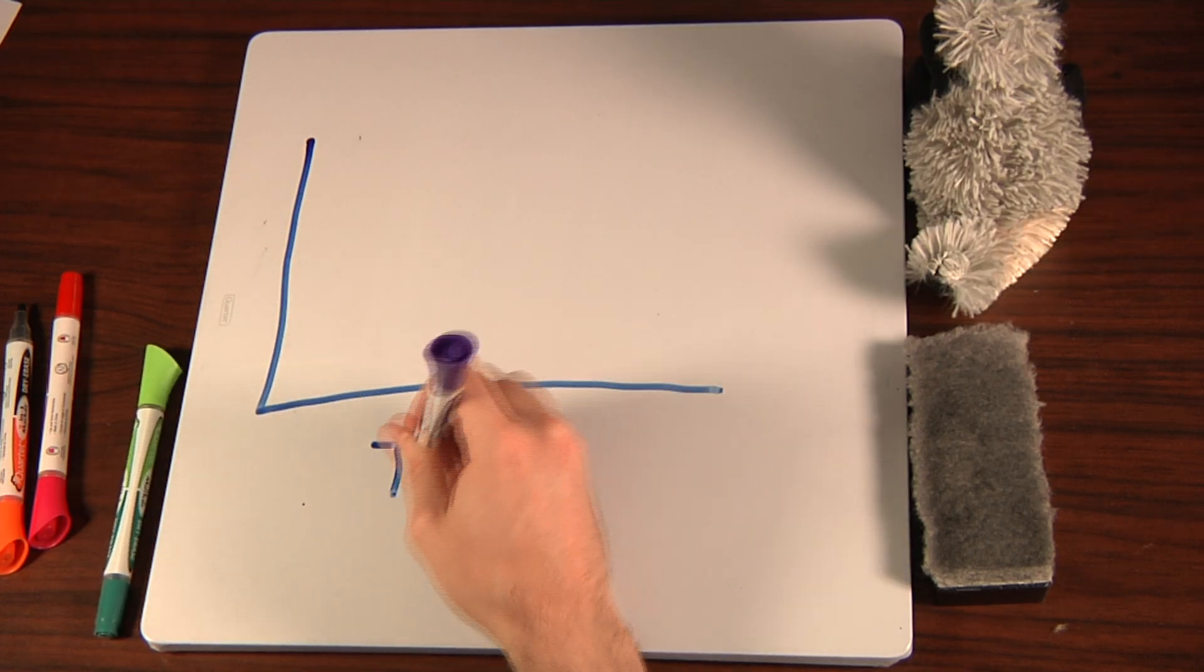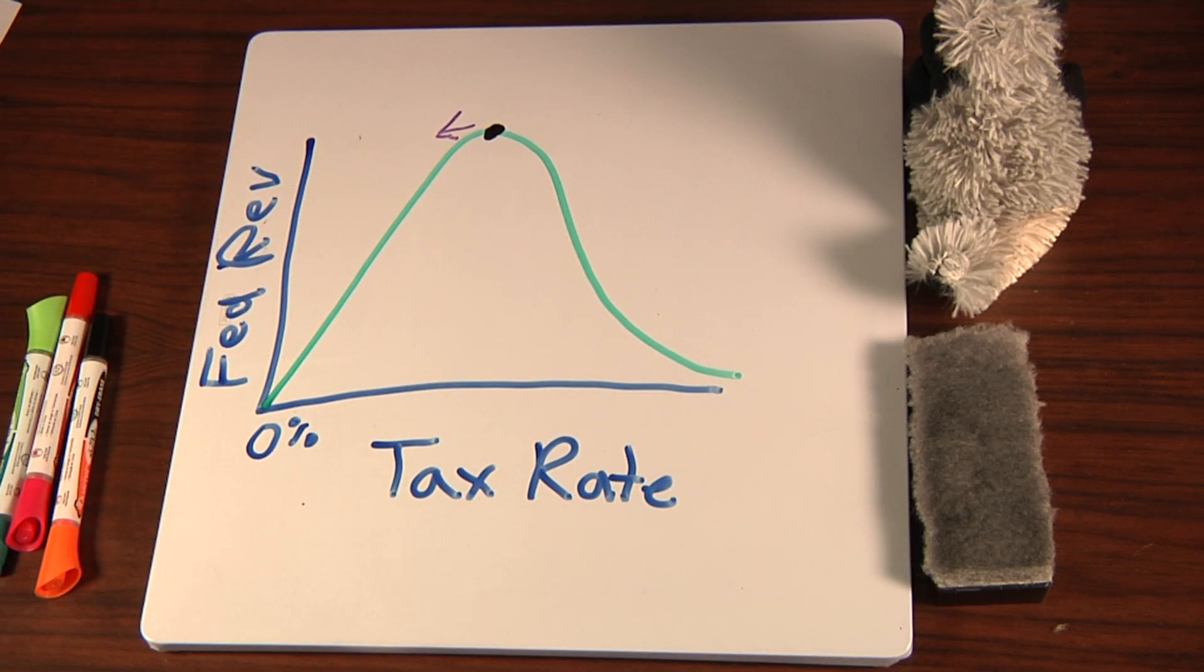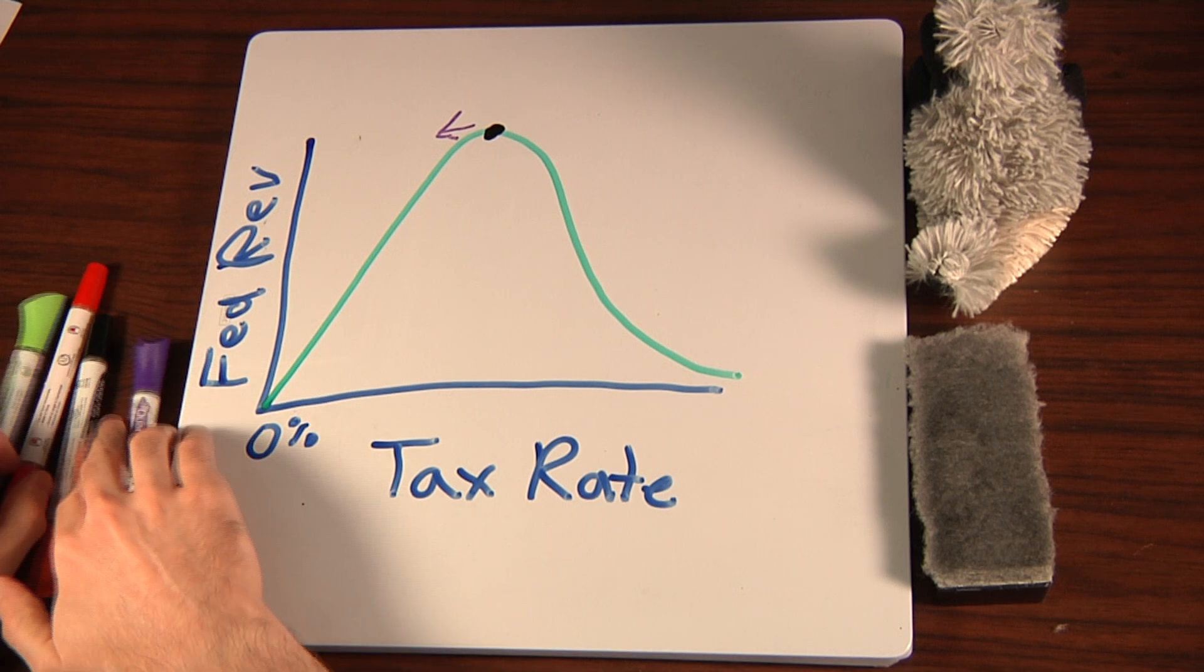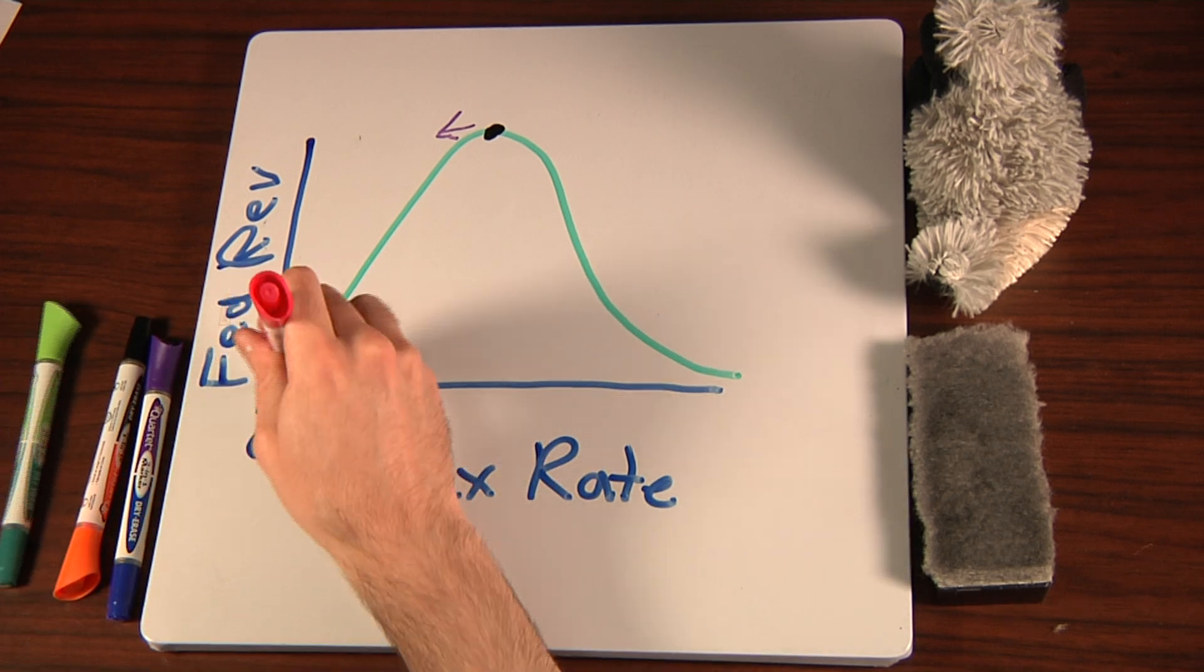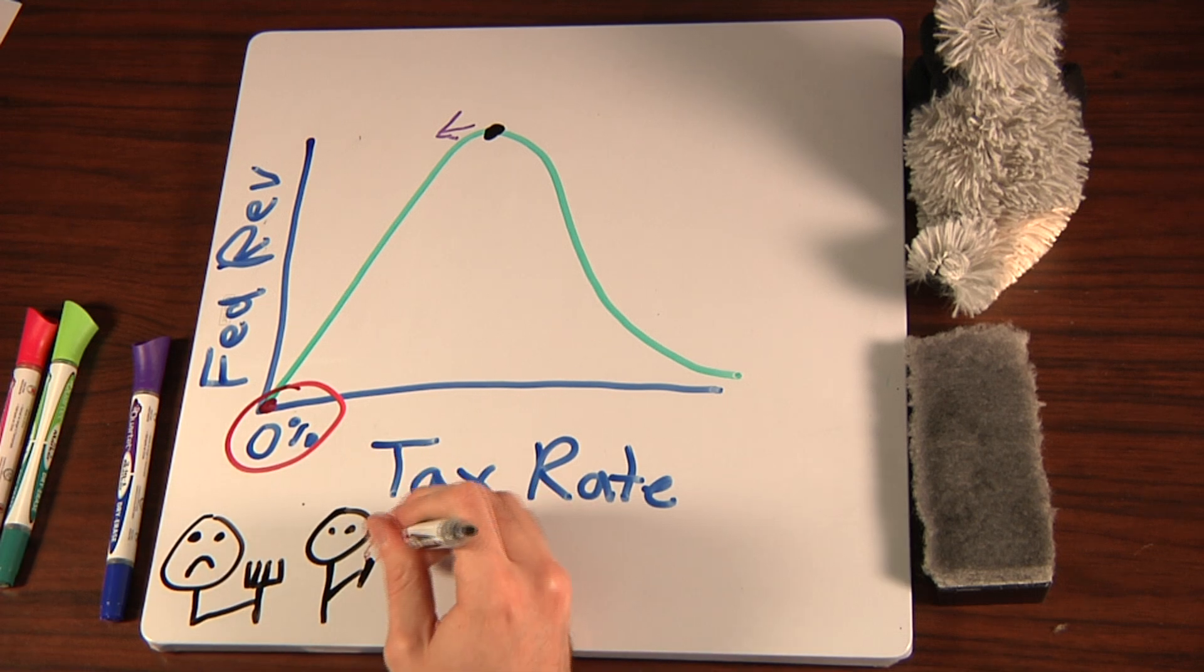Remember, this tax maximizing point is simply where tax revenue starts to fall. There's a negative impact on growth before this point, just not enough to cause revenue to drop. And I don't think zero percent is the growth maximizing rate, because anarchy doesn't seem very conducive to growth.